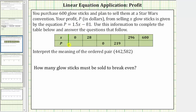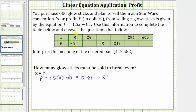Focusing on this first column, we're given X equals zero. We need to determine the corresponding P value, or the corresponding profit. To do this, we substitute zero for X in the profit equation. So when X equals zero, P equals 1.5 times zero minus 81, which simplifies to zero minus 81, which equals negative 81. This gives us the ordered pair (0, -81), meaning when zero glow sticks are sold, the profit is negative 81 dollars — there's a loss of 81 dollars.